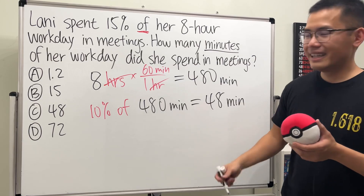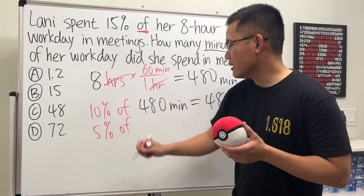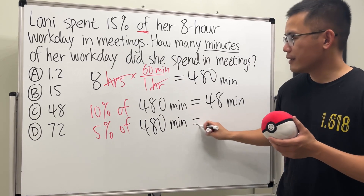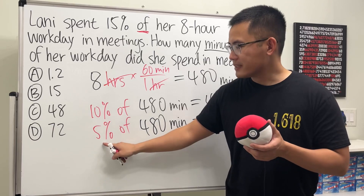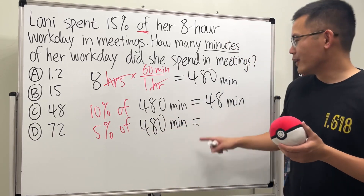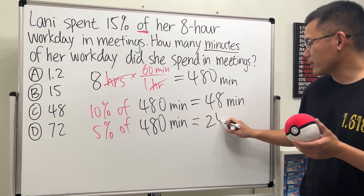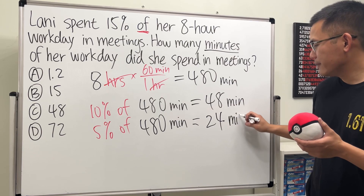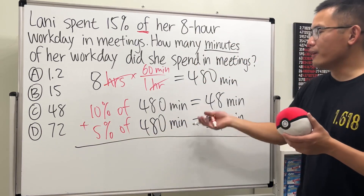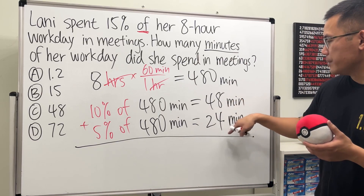Now we need 5% of 480. Five percent is just half of 10%, so it's half of 48, which is 24. So we have 24 minutes. Now we just add them up — that's how we get 15% of 480 minutes: 48 plus 24.